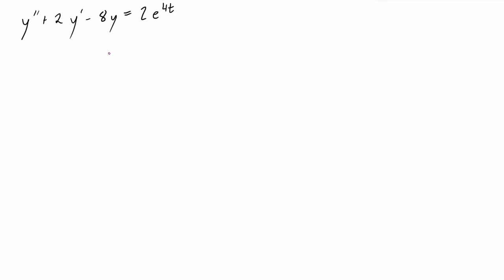Let's get the complementary solution out of the way first — it's really not part of the method of undetermined coefficients, but we can go ahead and get it started. We have y prime minus 8y, and we write the homogeneous differential equation associated with the original equation, which means we write the right-hand side as zero and keep the left-hand side as it is. Now we want to write the characteristic equation for this homogeneous differential equation.